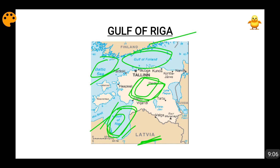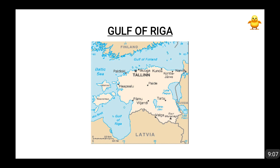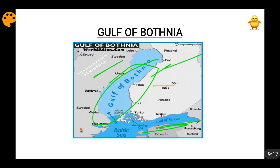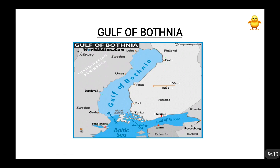Then comes the Gulf of Bothnia. As discussed, we have Gulf of Finland above and Gulf of Riga below — this is the Gulf of Bothnia. Sweden is on the western side and Finland is on the eastern side. It is the northernmost arm of the Baltic Sea, and the northern territories of this gulf are also known as the Bay of Bothnia.